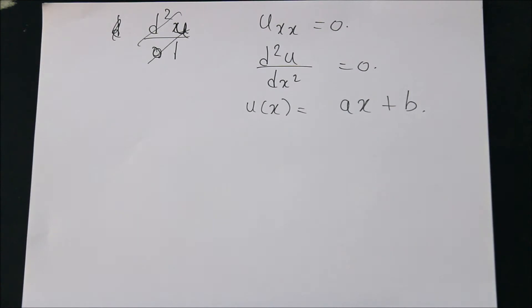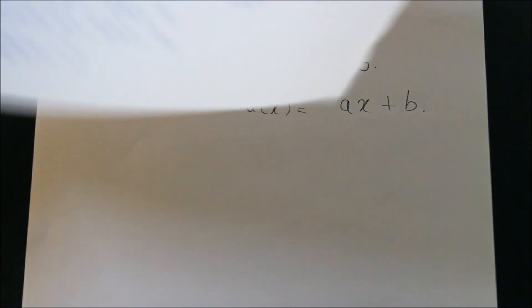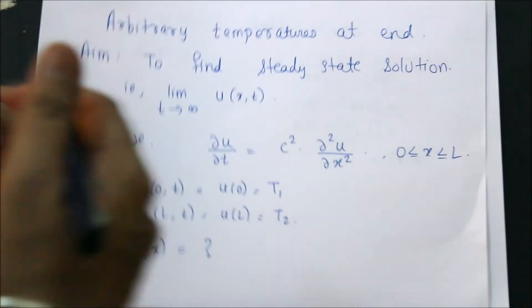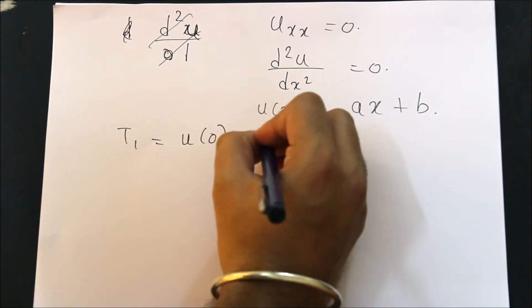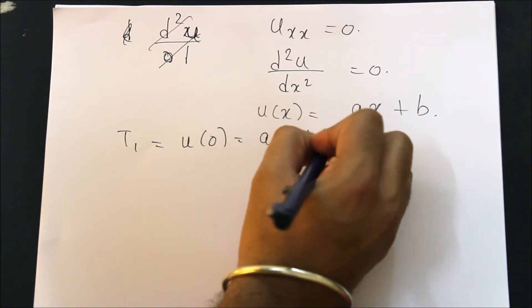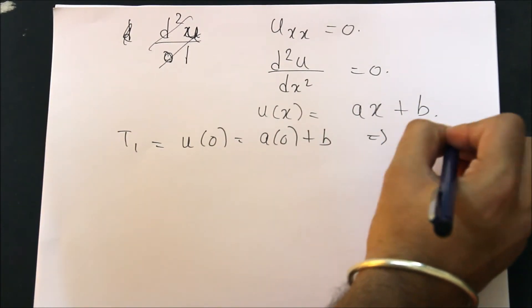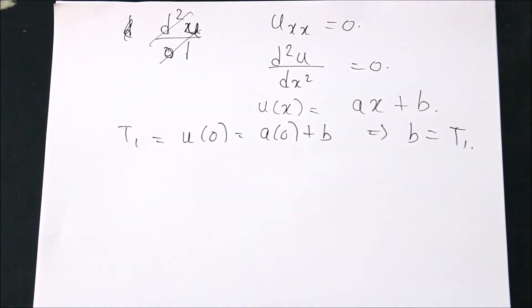Now let's find A and B. What is given? Initially, what is U of zero? At the left-hand point, the temperature is T1. So T1 equals U of zero equals A times zero plus B. This implies my B is nothing but T1, the temperature at the left-hand end.